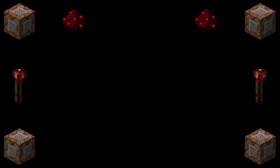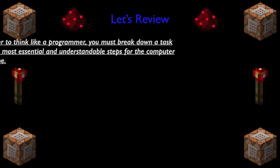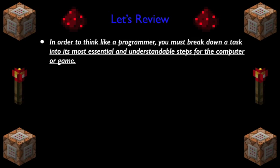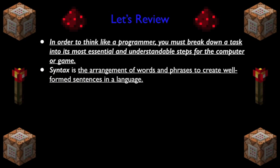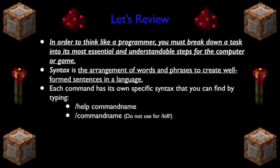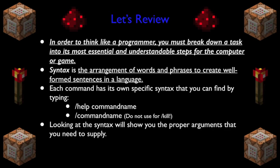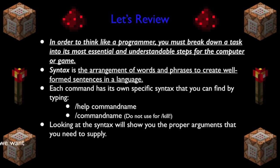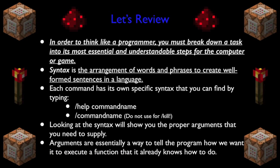Let's review. In order to think like a programmer, you must break down a task into the smallest and simplest understandable steps for the computer or game. Syntax is the arrangement of words and phrases to create well-formed sentences in a language. Each command has its own specific syntax that you can find by typing slash help followed by the command name, or just slash command name. Looking at the syntax will show you the proper arguments that you need to supply. Arguments are essentially a way to tell the program how we want it to execute a function that it already knows how to do.